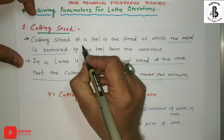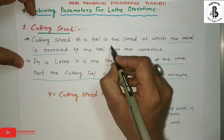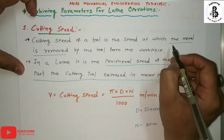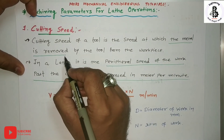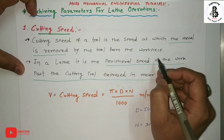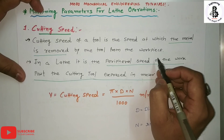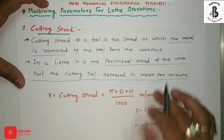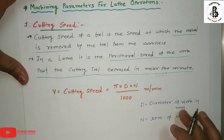Cutting speed of the tool is the speed at which the metal is removed by the tool from the workpiece. For the lathe machine, just you can see the basic arrangement.